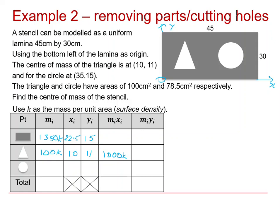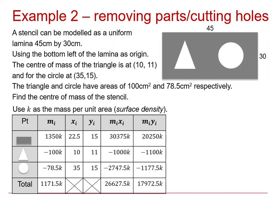And similarly, we'll have, for the area of the circle, which is 78.5, we'll have 78.5k. And its centre of mass is given as 35, 15. So we have all those calculations to fill in, in the usual way. There we are, that's done.